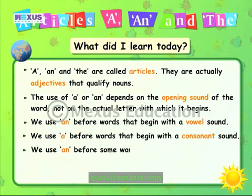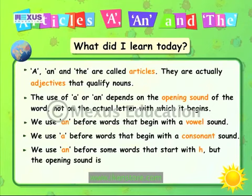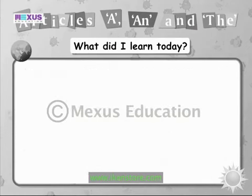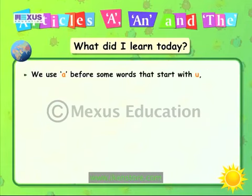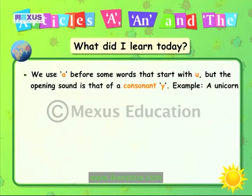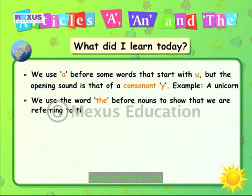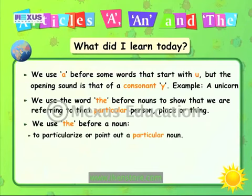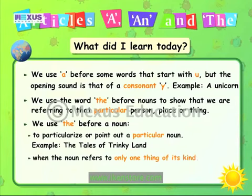We use 'an' before some words that start with H but whose opening sound is that of a vowel — H is silent. Example: 'an hour'. We use 'a' before some words that start with U but whose opening sound is that of a consonant Y. Example: 'a unicorn'. We use 'the' before nouns to show we are referring to a particular person, place or thing, to particularize a noun — for example, 'the Tales of Trinky Land' — and when the noun refers to only one thing of its kind, for example 'the sun'.